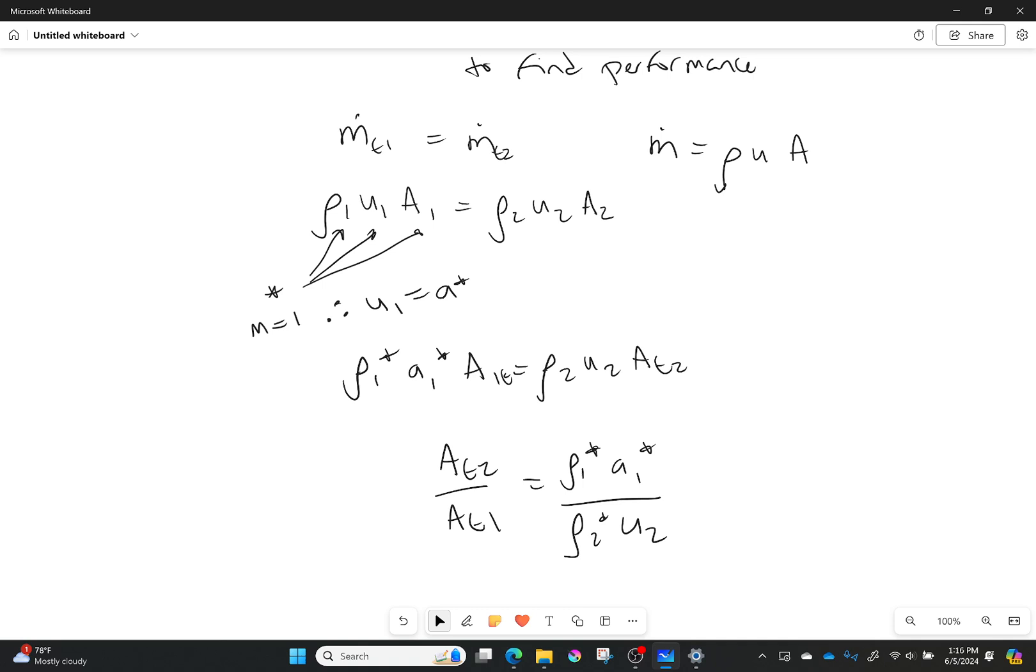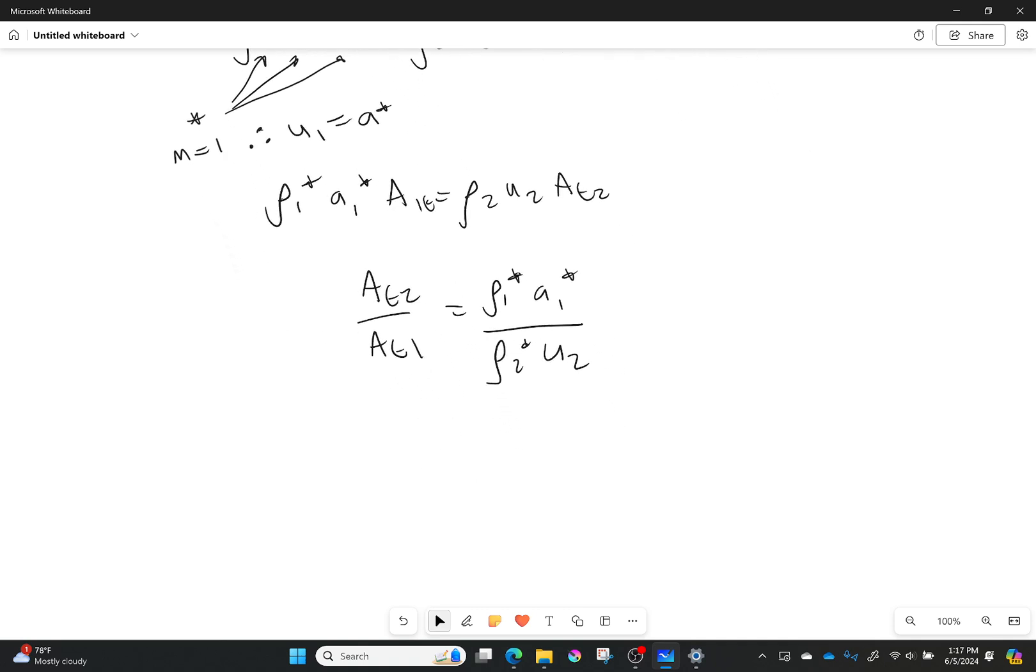But we still need to simplify this more. So one thing we might realize or might be able to assume is, let's assume here that M2 is also equal to 1. So in that second throat we're going to say that it's also equal to 1.